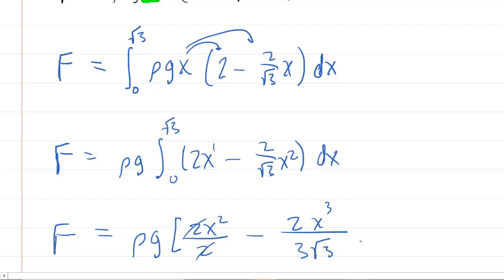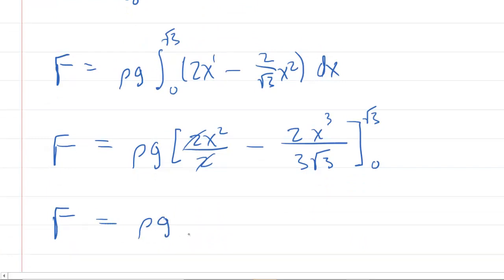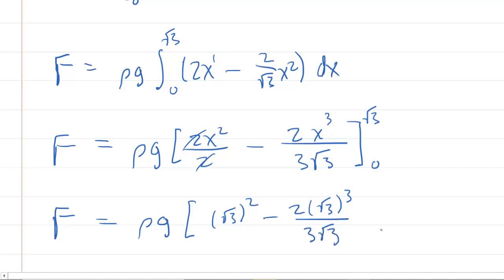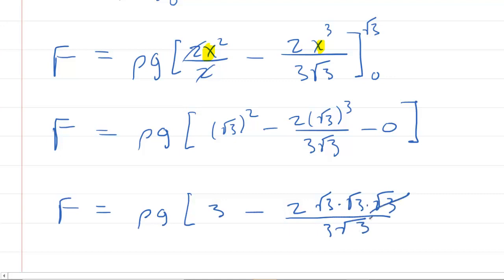Plugging in the upper bound: radical 3 squared minus 2 times radical 3 cubed over 3 radical 3. The lower bound gives zero. Radical 3 squared equals 3. For the second term, radical 3 cubed is radical 3 times radical 3 times radical 3; the radical 3s cancel, and radical 3 times radical 3 equals 3, which cancels with the 3 on the bottom, leaving just 2. So we have 3 minus 2 equals 1.